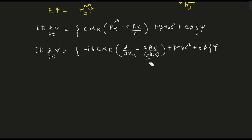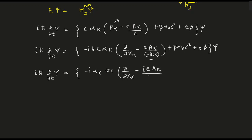Cleaning this up: i h-bar del/del t psi equals minus i alpha_k h-bar c del/del x_k minus i e A_k divided by h-bar c, plus beta m_0 c squared plus e phi, all acting on psi.